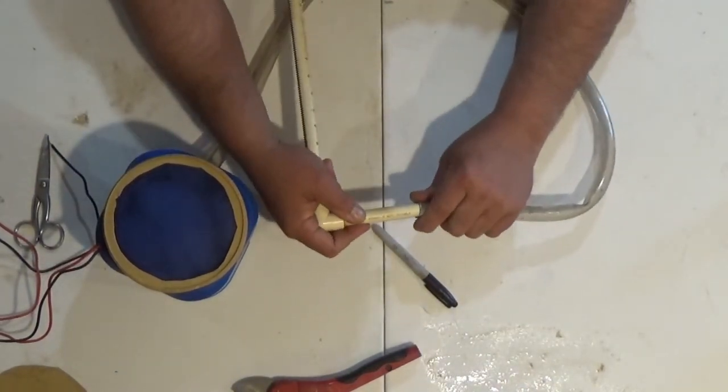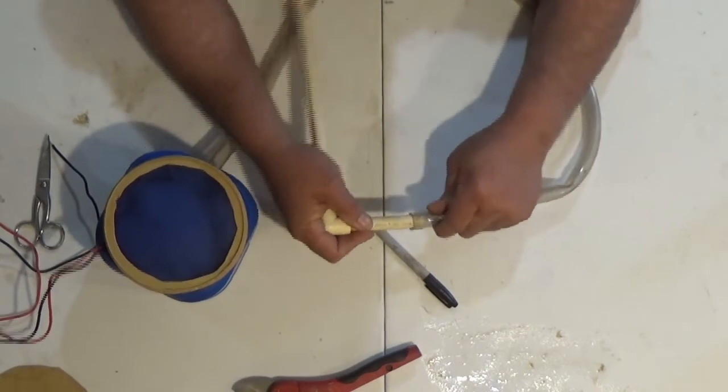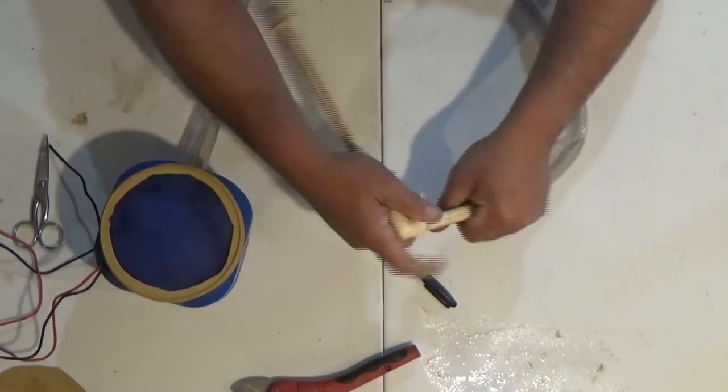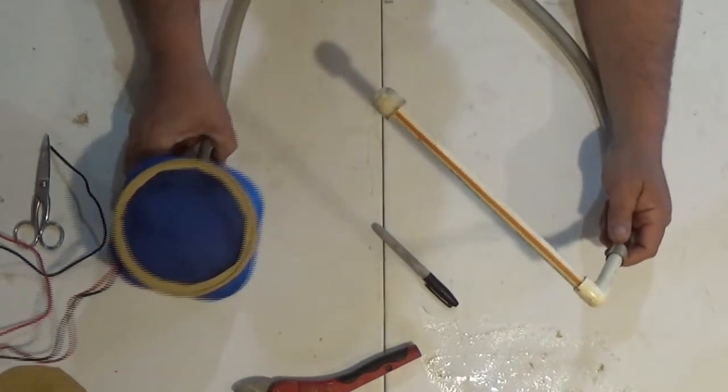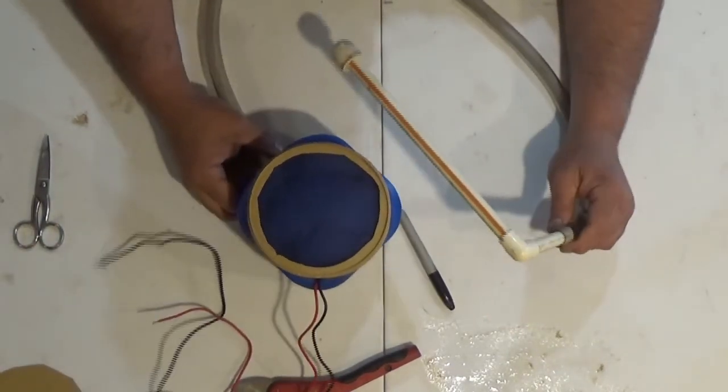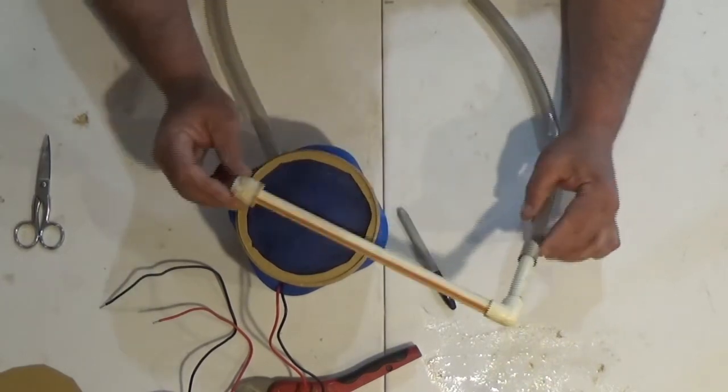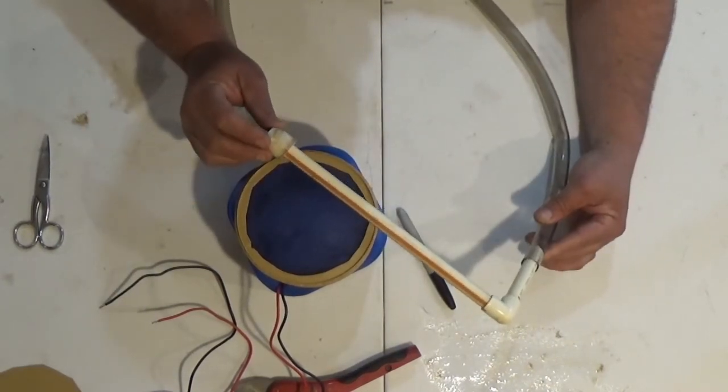So now we have our filter that's gonna go down in our minnow tank. It's gonna pump the water out and it's gonna pump it up to this spray head that we've created. When we get it all set up I'll show you how it works.